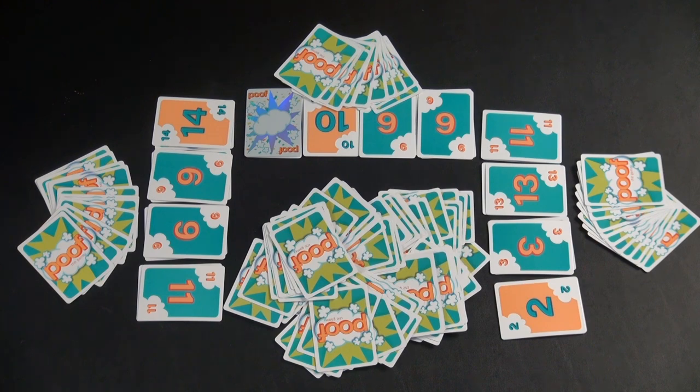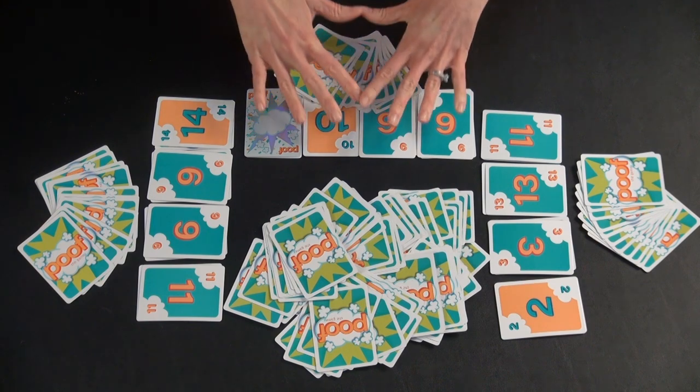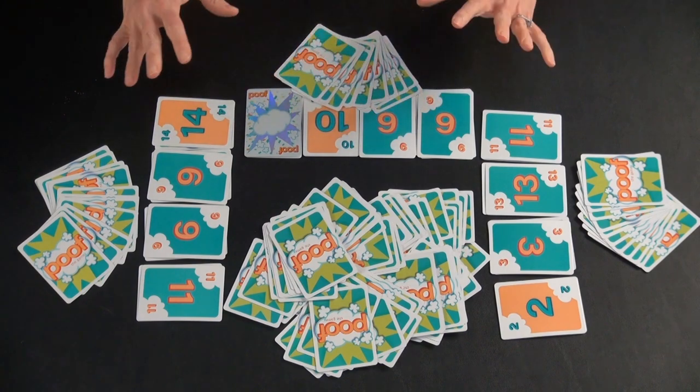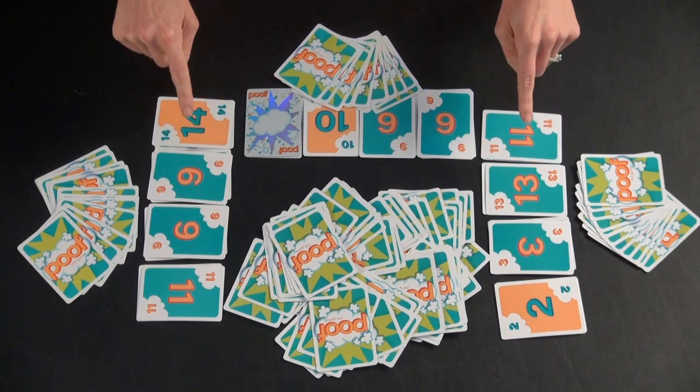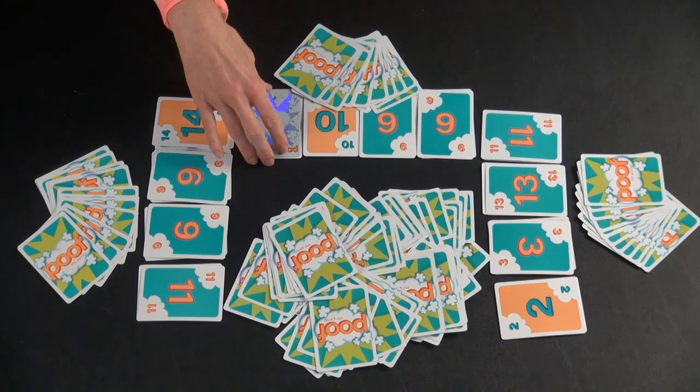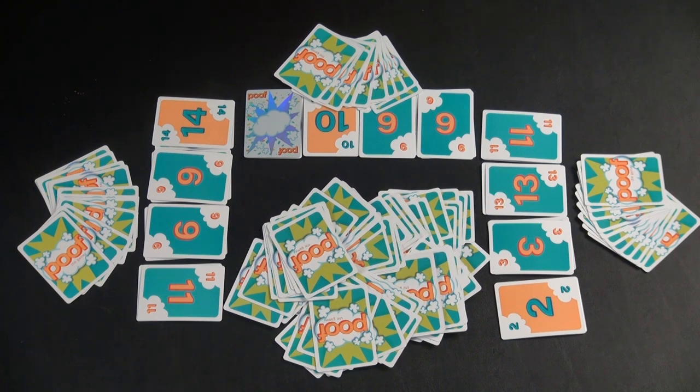The goal of the game is to be the first to get rid of all of the cards in your hand. For setup, we have a three-player game here, so you would use all the cards numbered 1 to 14 and all of the Poof cards. You would not use the numbers 15 to 20. You would use those with a different player count.